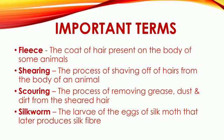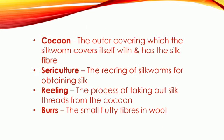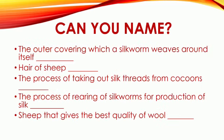Silkworm: the larvae of the eggs of silk moth that later produces silk fiber. Cocoon: the outer covering which the silkworm covers itself with and has the silk fiber. Sericulture: the rearing of silkworms for obtaining silk. Reeling: the process of taking out silk threads from the cocoon. Burrs: the small fluffy fibers present in the wool.